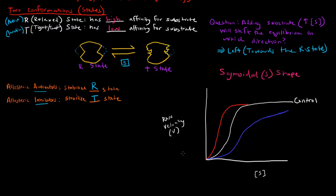Notice that the reaction velocity at low substrate concentrations is low — that corresponds to the T state. Here at low substrate concentrations we'd expect the T state, because the enzyme is not very active. But as we increase the substrate concentration, notice that reaction velocity increases, meaning we're making the enzyme more active. If we're making it more active, we're stabilizing the R state — as we add more substrate, we stabilize the R state.